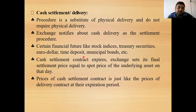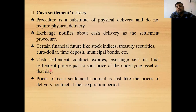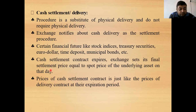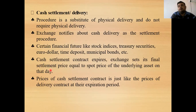When a cash settlement contract expires, the exchange sets the final settlement price equal to the spot price of the underlying asset on that day. For example, if you entered into July iron futures 2020 and have not done the settlement, the exchange will do the final settlement by considering the spot price of the underlying asset on that day. If you are unable to do it, the exchange will do it on your behalf. The price of a cash settlement contract at expiration works just like that of a delivery contract.